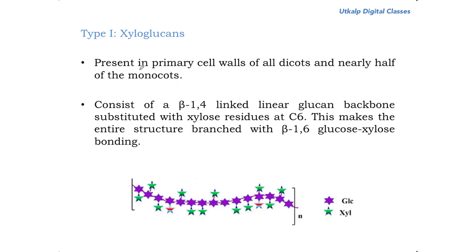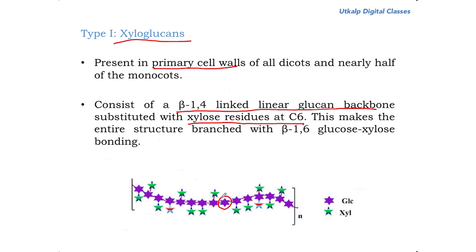Type 1 hemicellulose, xyloglucan, is present in the primary cell walls of all dicots and nearly half of the monocots. It consists of a beta-1,4 linked linear glucan backbone substituted with xylose residues at the sixth carbon. As seen in the figure, two glucose molecules are linked in a beta-1,4 manner, and to one glucose molecule there is a xylose molecule linked in a beta-1,6 manner — at the sixth carbon of that glucose.